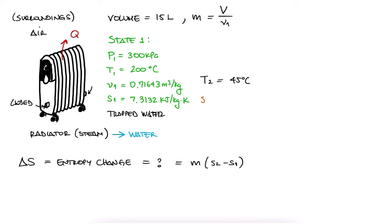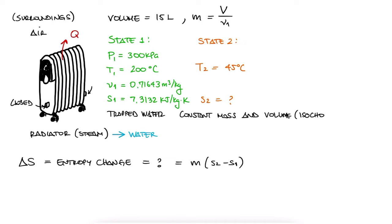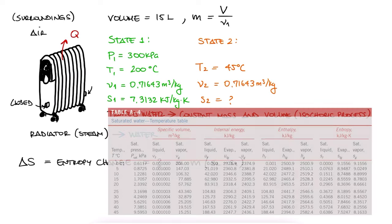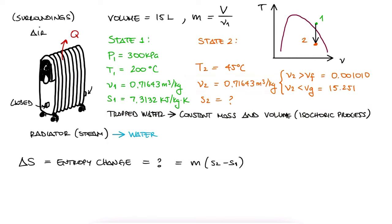Now for the entropy value for state 2, we need to know one more thing besides the given temperature of the steam. Since neither the volume nor the mass will change because it's trapped between the valves, the specific volume of state 2 is the same as the specific volume at state 1. At 45 degrees Celsius, from our saturated tables, we see that V2 is above VF and below VG. This means our fluid is in a saturated mixture state.